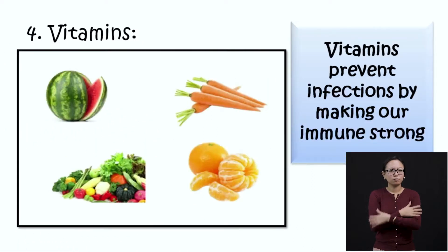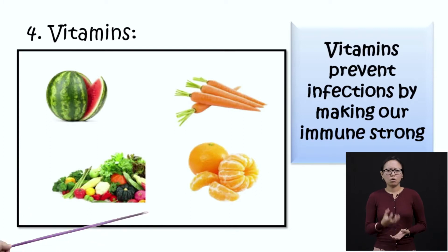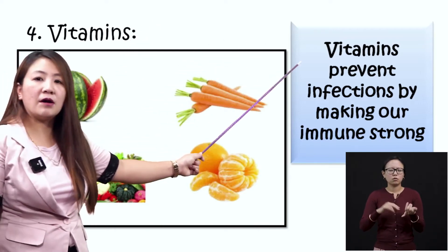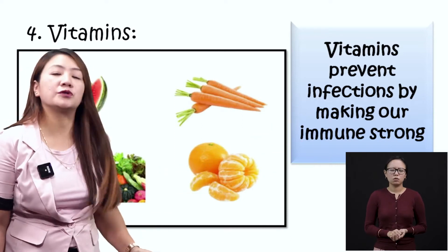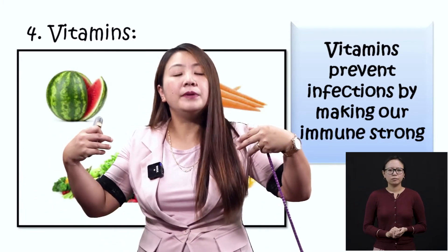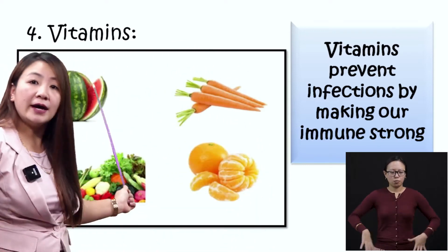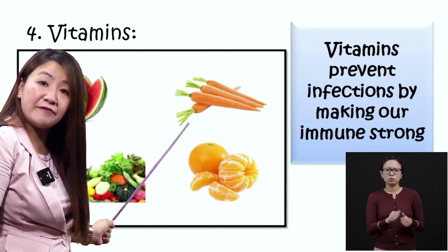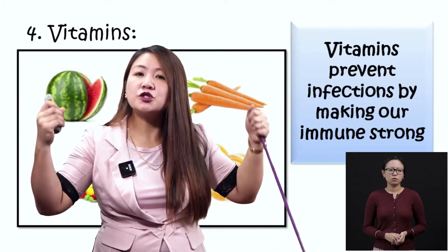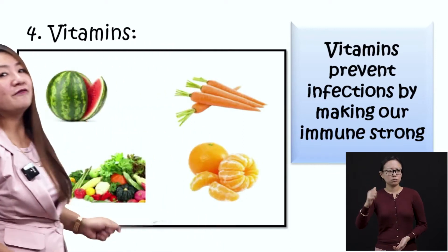Fats act as stored energy as well as insulators of heat — they retain heat. Then we have vitamins. Vitamins are contained in fruits and vegetables, and they are very useful because they prevent infections by making our immune system strong. Our own body has armies inside our blood to fight back diseases, and they are strengthened because of vitamins. If you take lots of fruits and vegetables, we get lots of vitamins and our immune system gets strong, so we don't get sick often.